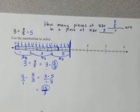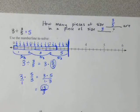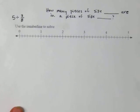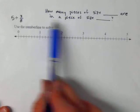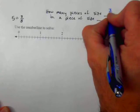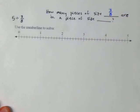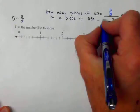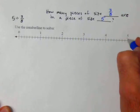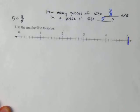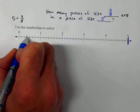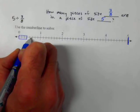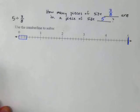We'll do one more example: 5 divided by 3 eighths. Our question is: how many pieces of size 3 eighths are in a piece of size 5? So I'm going all the way down here to 5. Let's find 3 eighths. There's 1, 2, 3 — this is already cut into eighths, which is pretty nice. So that's what we're counting in.